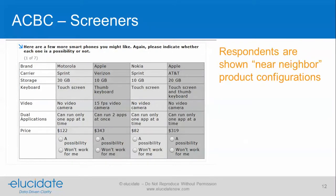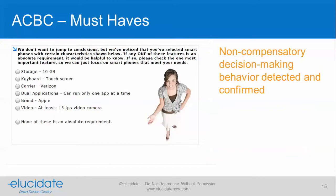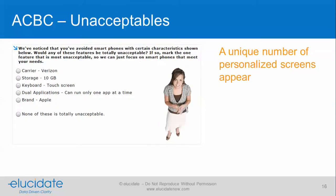Next we go into a screener section. This is where we take near-neighbor product configurations — products that are near the optimal configuration the respondent just chose in the build your own. Price is summed and randomly varied, and this is where we capture our none parameter. During the screener section we're picking up non-compensatory decision-making behavior — a choice behavior where one sets cutoff rules, or says certain things are absolutely must-haves, or that certain features are unacceptable.